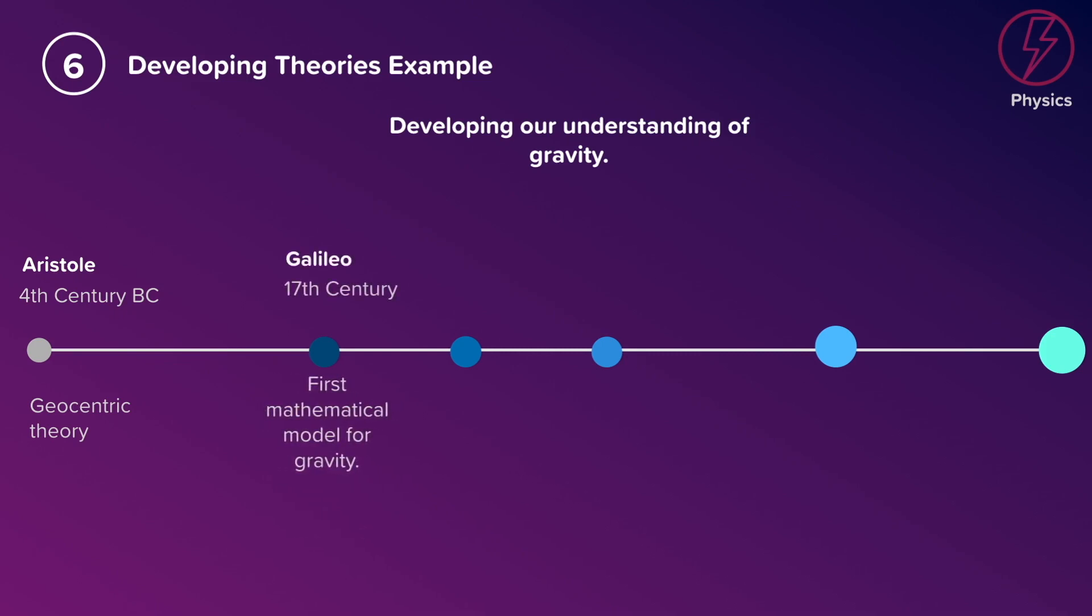However, moving forward to the 17th century, in the mid-17th century, Kepler produced work on the laws of planetary motion in orbits, around 50 years before Newton providing a mathematical model for Kepler's laws.